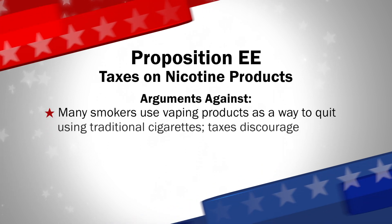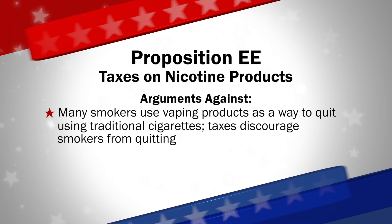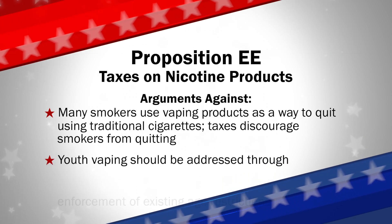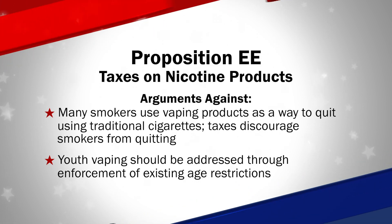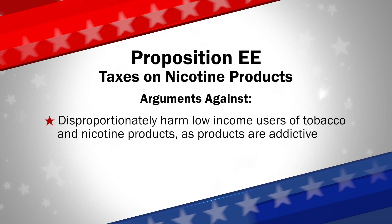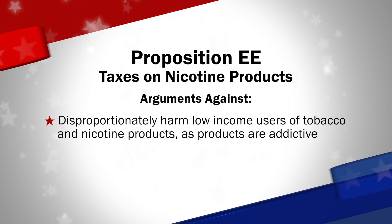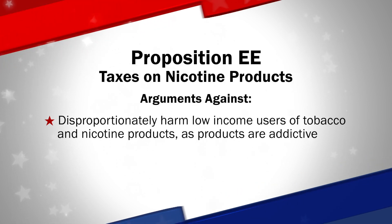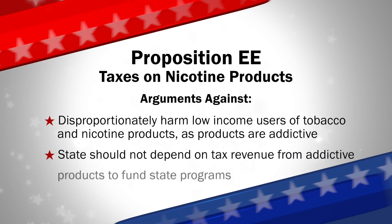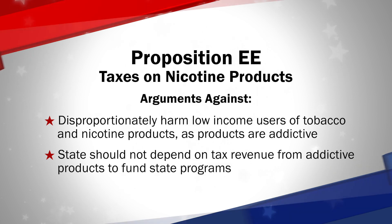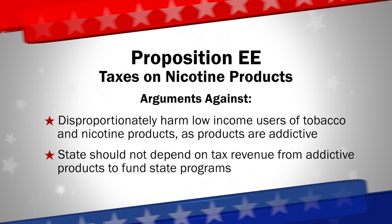Opponents say many smokers use vaping products as a way to quit using traditional cigarettes, and taxes on vaping products discourage smokers from quitting. Youth vaping should be addressed through enforcement of existing age restrictions and additional education and prevention. Opponents also say these are regressive taxes that disproportionately harm low-income users of cigarette, tobacco, and nicotine products. Because these products are addictive, users may continue to purchase them even after a tax increase. The state should not depend on tax revenue from addictive products to fund state programs, especially when the tax is intended to decrease consumption of those products.